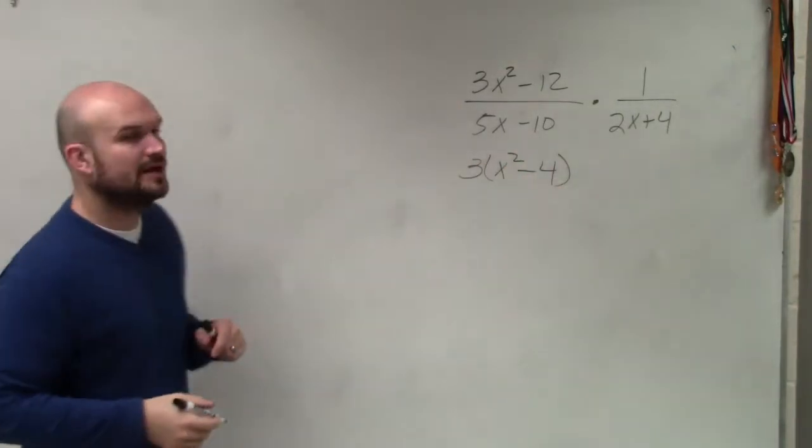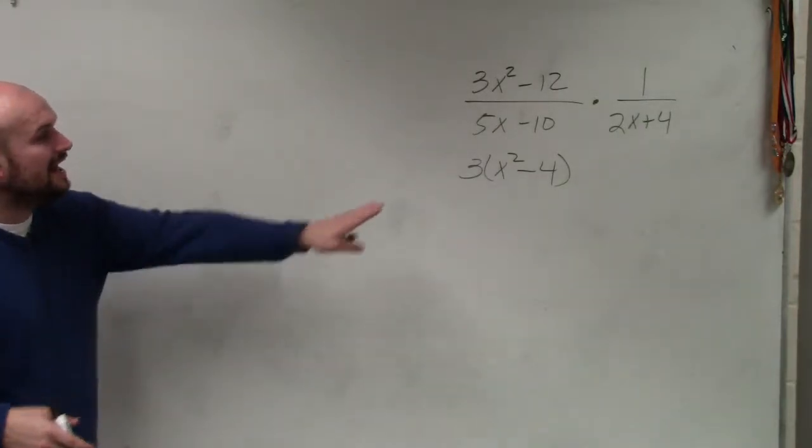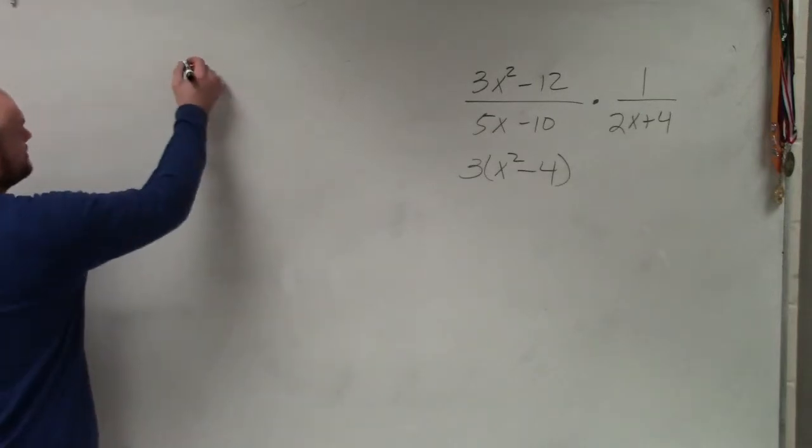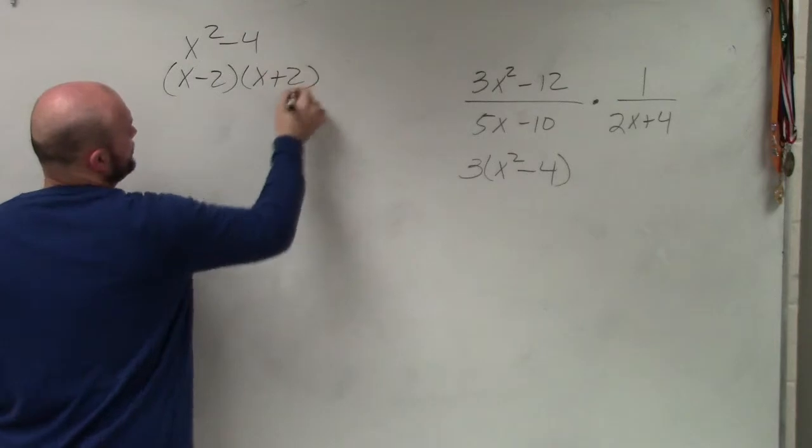Now, I will like you guys to notice that here, when I have x squared minus 4, I can factor that further because that's a difference of two squares. So that becomes x minus 2 times x plus 2.